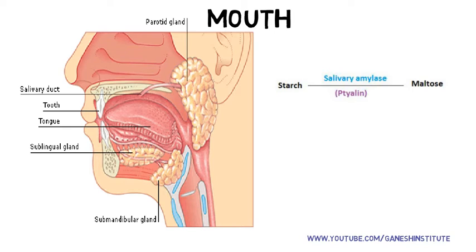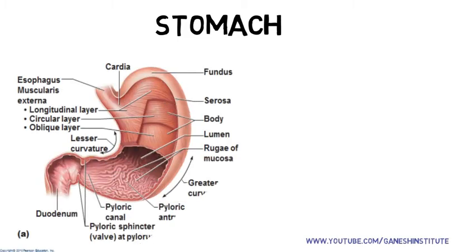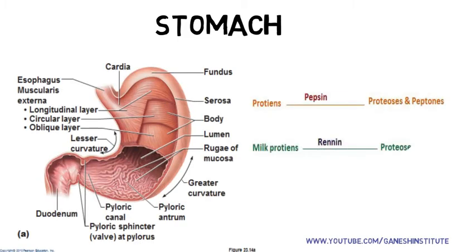Now we are moving towards the stomach. Stomach has two enzymes: pepsin and rennin. Pepsin is the activated form of pepsinogen, which becomes activated by the action of HCl acid. Pepsin converts proteins into proteoses and peptones. Whereas rennin converts milk proteins into proteoses and peptones. Rennin is present in adult humans as well as in calves.